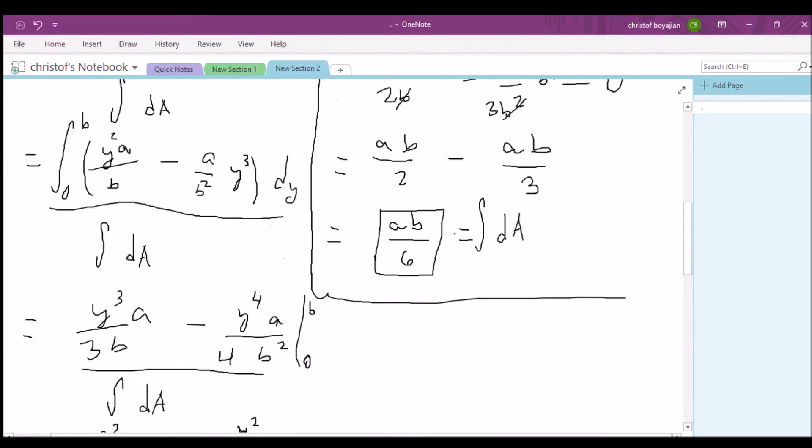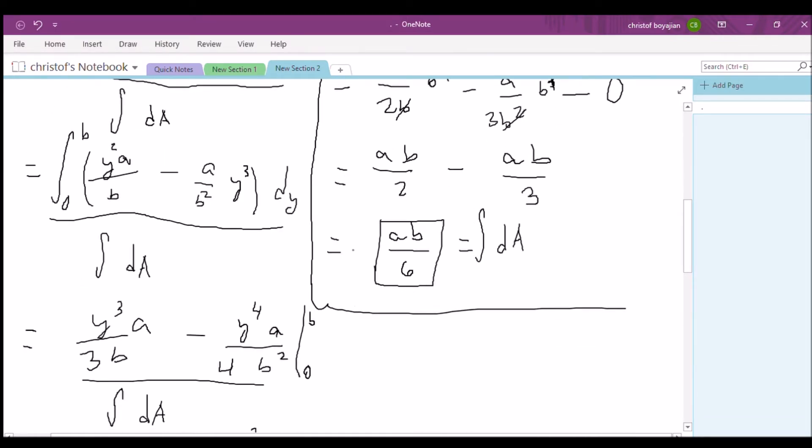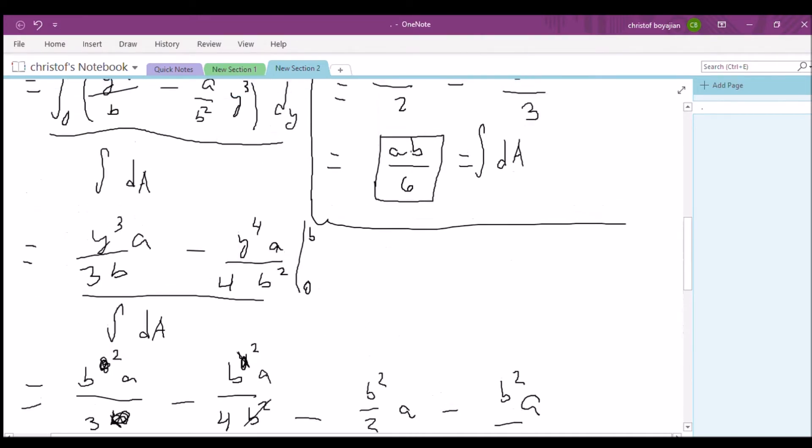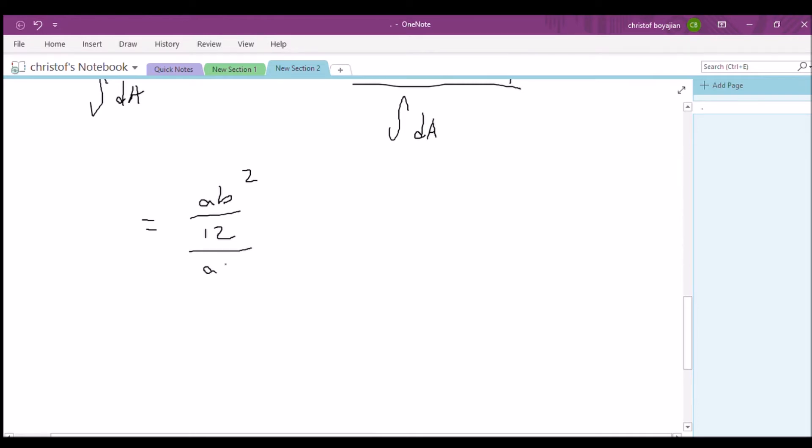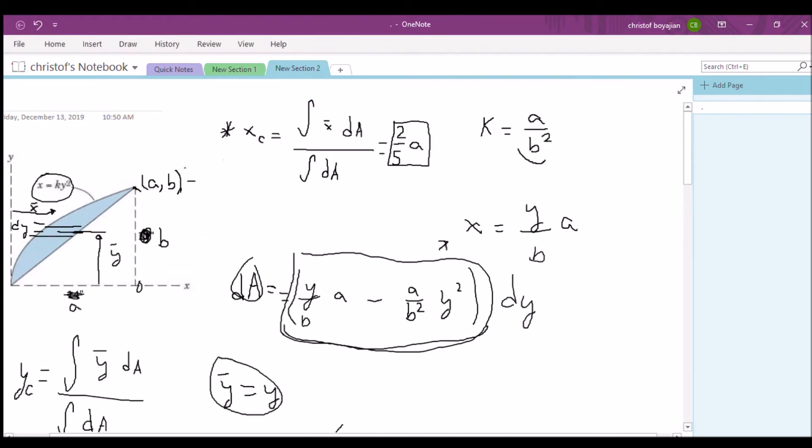So let's divide by our dA. And we said our integral of dA is a times b over 6, so let's divide it by a b over 6. Now let's multiply this by its reciprocal. So we should have a b squared over 12 times 6 over a b. And if we simplify all these terms, it should end up just being b over 2. All right, so that is the y-coordinate of our centroid of this area right here, this little shaded area.